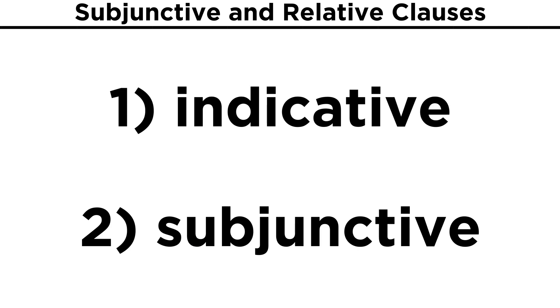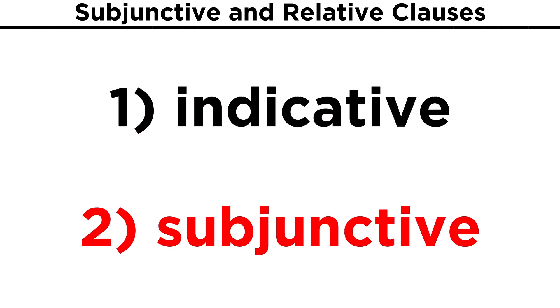Here are a few more examples with pairs of sentences: the first using indicative because it describes a known fact, and the second using subjunctive because it describes the same situation but with uncertainty.